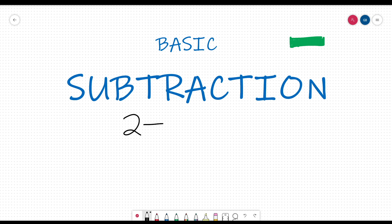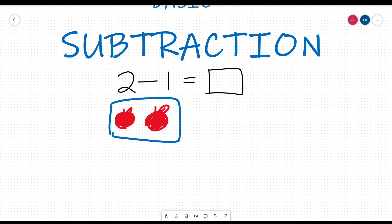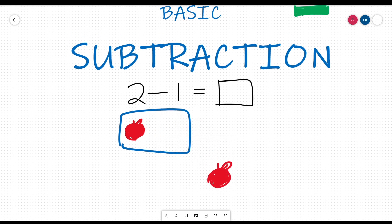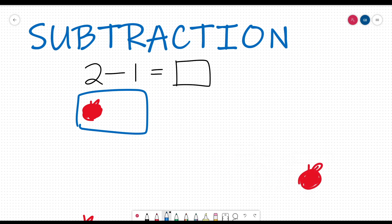Let's start off easy by learning how to solve 2 minus 1. Let's say you have two apples. Then I take one apple away from you. Now how many apples do you have left in the box? Since there is only one left, the answer is 1.